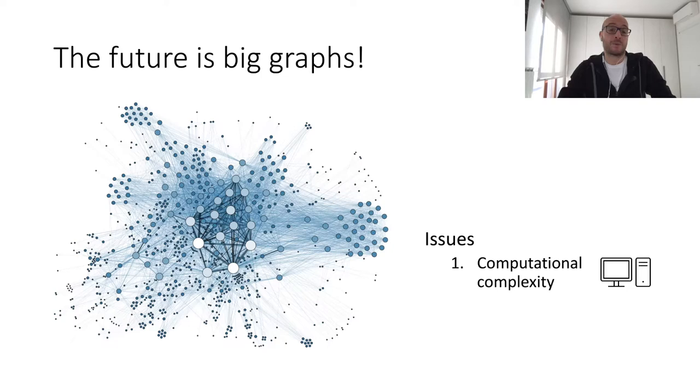The second problem is that in most domains graphs continuously change, they evolve over time. Consider, for instance, the connections in a social network or the physical interactions in a mobile IoT scenario. This is problematic as the results derived from the expensive analysis, so refer to the first problem, not only are they computationally expensive, but they are frequently invalidated and they need to be continuously recomputed.